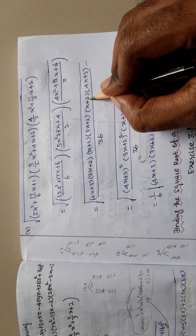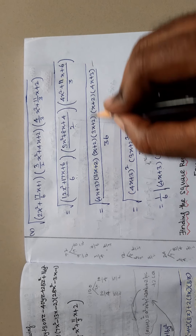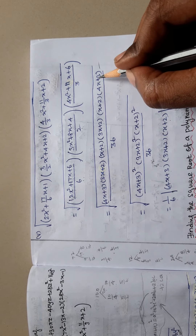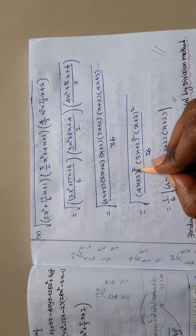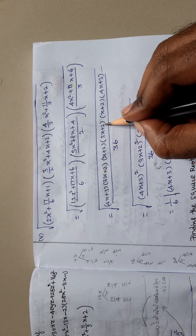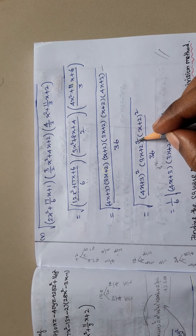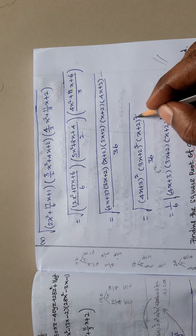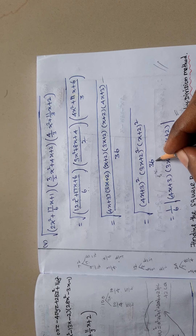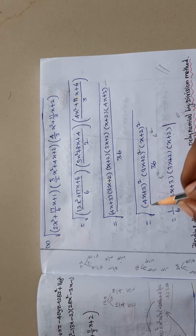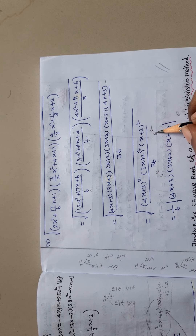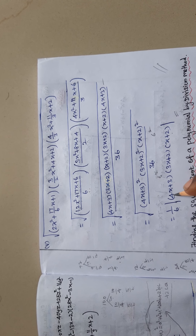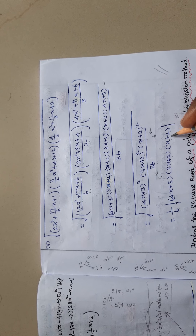So x plus 2 into 4x plus 3, divided by 6 squared — 12 into 3 is 36. Here 4x plus 3 appears 2 times, so we get 4x plus 3 whole squared. And 3x plus 2 appears 2 times, so we get 3x plus 2 whole squared. And x plus 2 also appears 2 times, so we get x plus 2 whole squared, divided by 36. And 36 can be written as 6 squared. So the square root cancels, giving 1 over 6 into 4x plus 3 into 3x plus 2 into x plus 2.